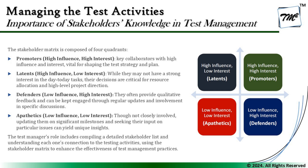The first quadrant in the stakeholder matrix is Promoters. They have high influence and high interest — key collaborators vital for shaping the test strategy and plan. Promoters could be our customers, our test leadership, or people who define project timelines and project goals. These are people who determine what needs to be done at what point in time. They have high contributions, high interest, and high influence — meaning they determine how testing should continue.